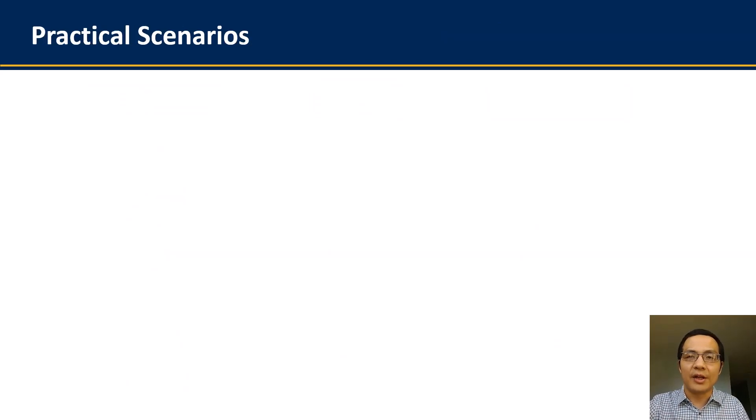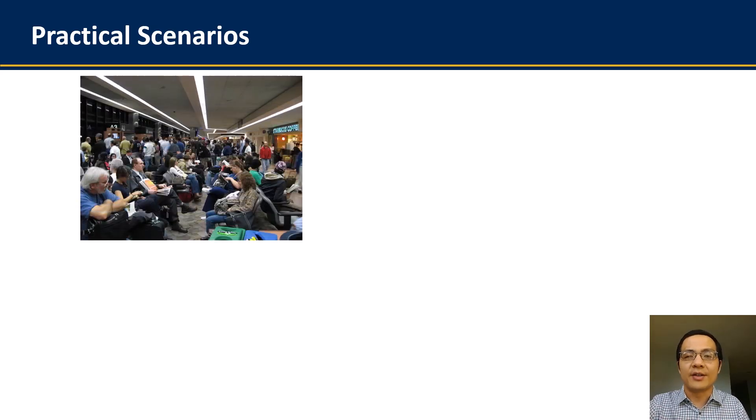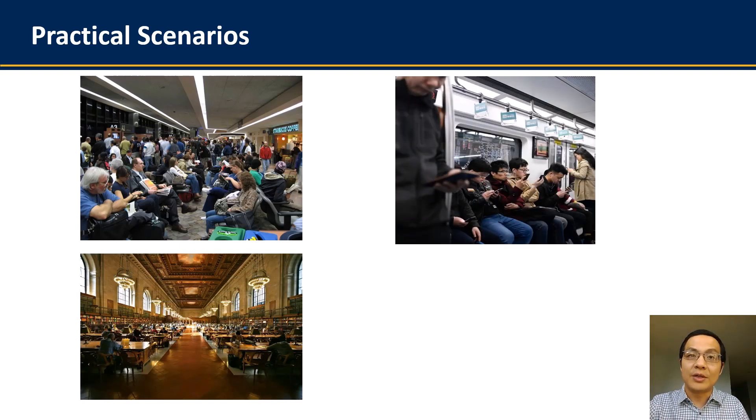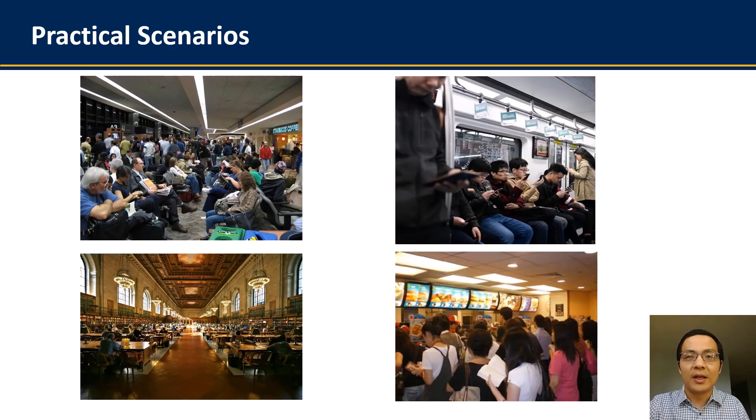Based on these characteristics, this eavesdropping attack could be practically launched in many scenarios to eavesdrop the victim's sensitive data when being inputted via handwriting, especially in crowded public spaces where multiple people have to share the same space. Typical examples of these scenarios widely range from the airport terminals, public transports, to restaurants, and public libraries, in which the attacker can conceal an eavesdropping device within the victim's physical proximity without being noticed.